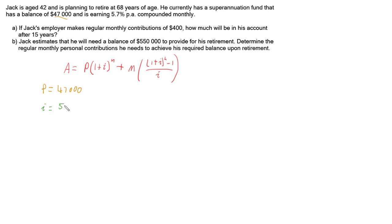i is our interest, which is 5.7%, but we want that as a decimal, so we'll divide that by 100. We also want it per period. Our periods are monthly, at the moment this is annually, so we're going to divide by 12. And for the sake of not getting rounding errors, we're going to have 5.7 over 1200 as i.